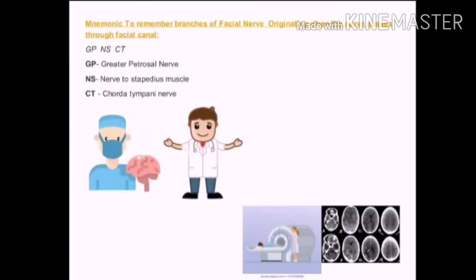Facial nerve arises from its nucleus in the pons part of the brain stem. It passes through the internal acoustic meatus and comes into the middle ear cavity, wherein the middle ear cavity has got a facial canal. Our first mnemonic is to remember the branches of facial nerve originating when the facial nerve passes through the facial canal.